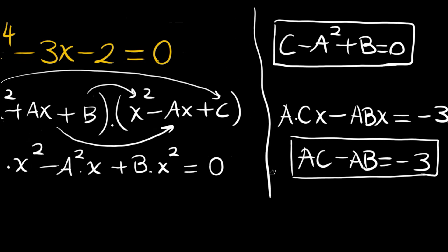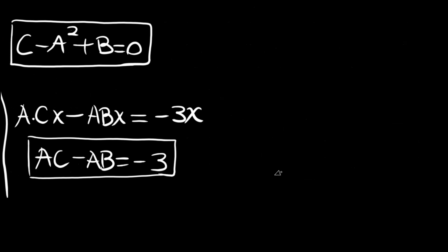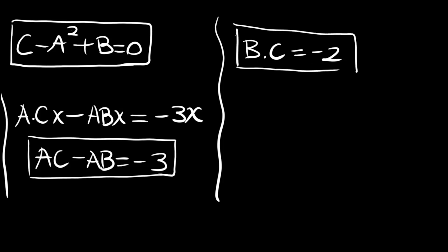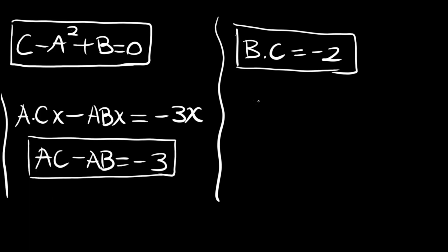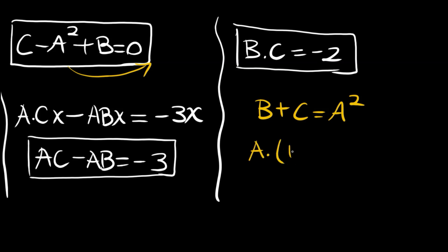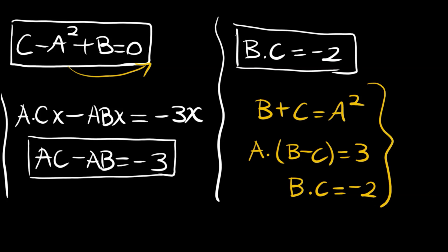Lastly, the constant term gives us B times C equal to negative 2. So we have three unknowns and three equations: B plus C equals A squared, A times B minus C equals 3, and BC equals negative 2. This system should be solvable.